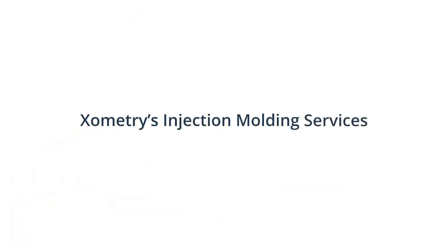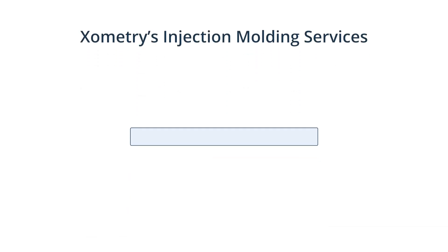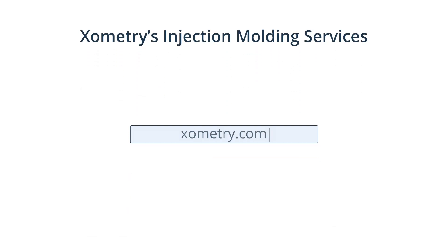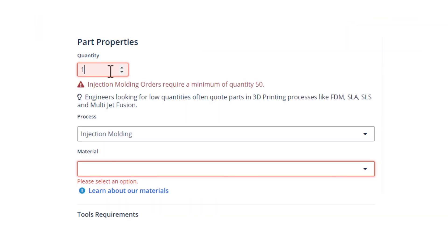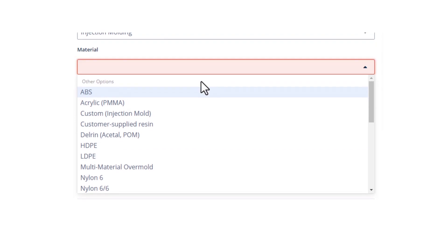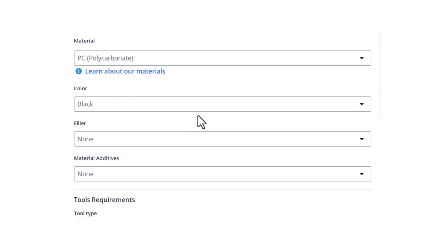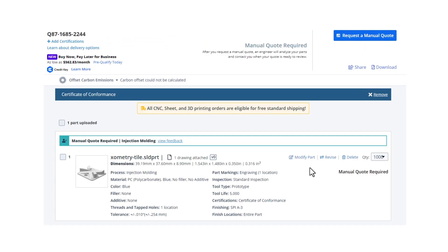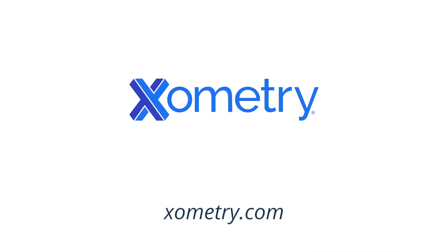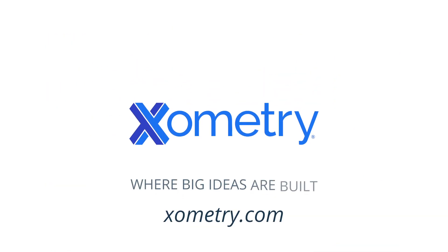Reliable processes, optimising part designs for manufacturing and high quality mould tooling are crucial for achieving consistently high quality parts. Xometry will help you source your injection moulded parts by providing comprehensive DFM feedback and manufacturing your parts with our vetted production partners. Simply upload your 3D model using our online platform, set the required quantity, materials, colour finishes and other specifications and submit a quote request. Xometry — where big ideas are built.